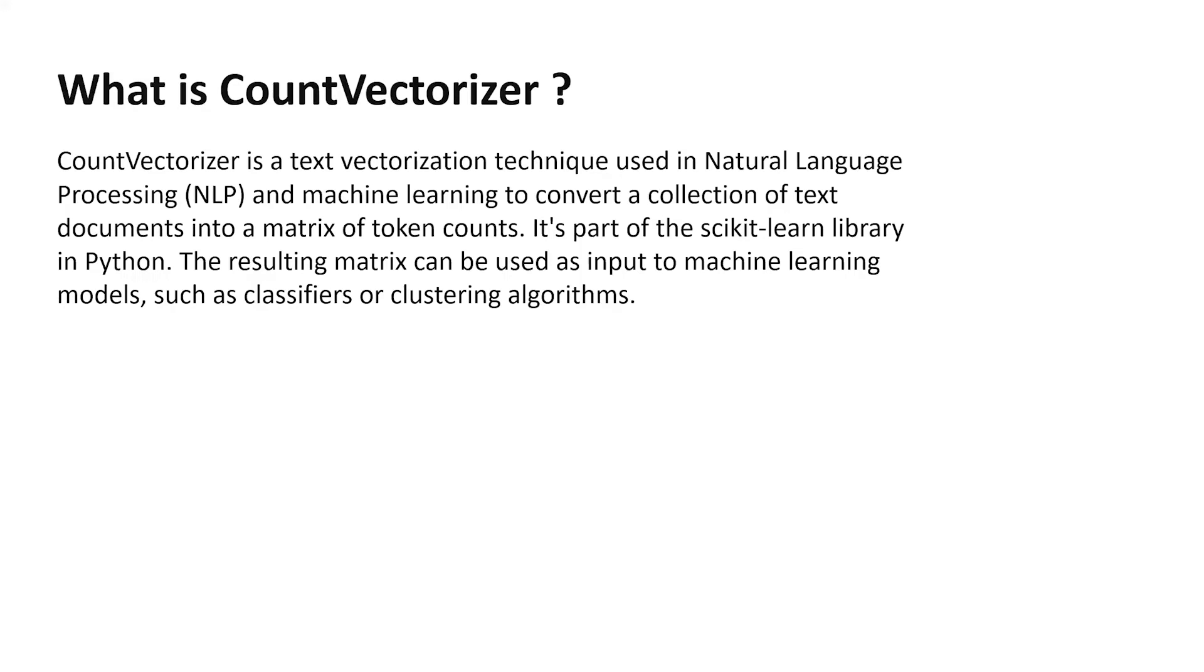So what is a count vectorizer? Count vectorizer is a text vectorization technique that's used in NLP and machine learning to convert a collection of text documents into a matrix of token counts. Token is another name for the word. Not strictly speaking, but you can safely use it as a replacement word. It's part of the scikit-learn library in Python. The resulting matrix can be used as input to machine learning models such as classifiers or clustering algorithms, or even regressors for that matter.